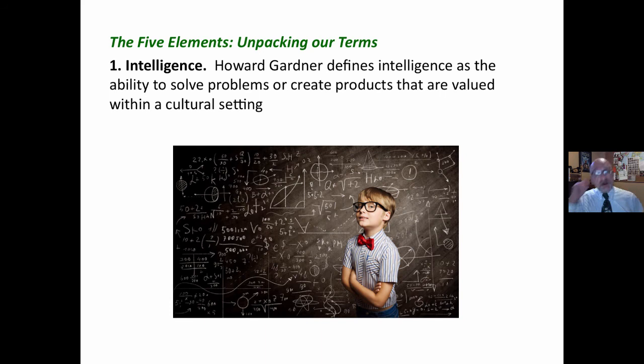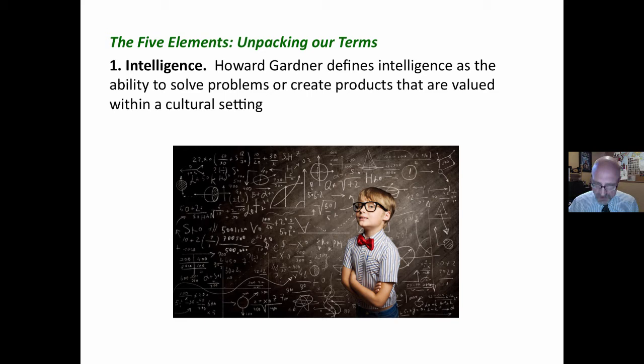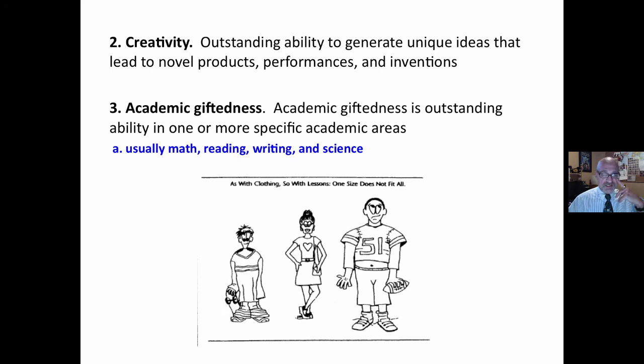Now let us unpack the five elements. Howard Gardner defines intelligence as the ability to solve problems or create products. As the domain changes, the types of thinking necessary to solve problems change as well. We do not know exactly what intelligence is — it is much more than that narrow band of thinking measured on intelligence tests, and all state requirements say giftedness should be measured using multiple criteria, not simply intelligence tests. Creativity is defined as outstanding ability to generate unique ideas that lead to novel products, performances, and inventions — an important trait.